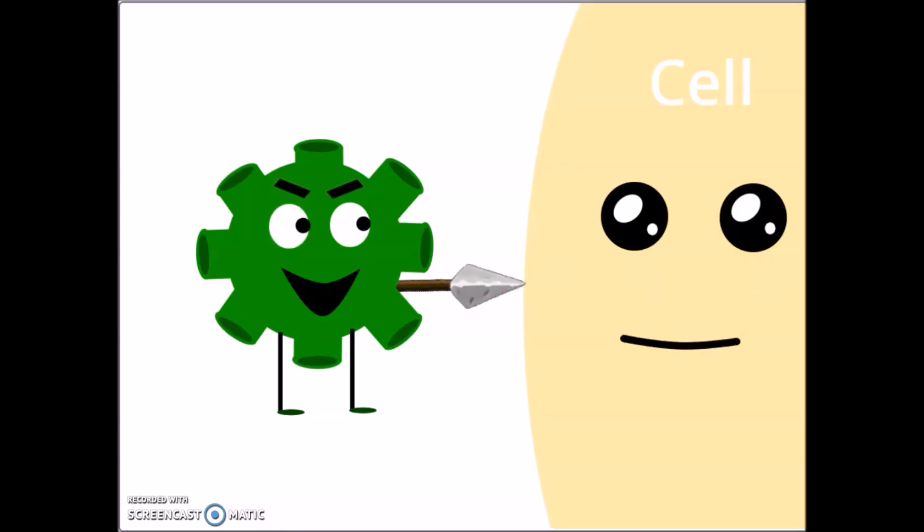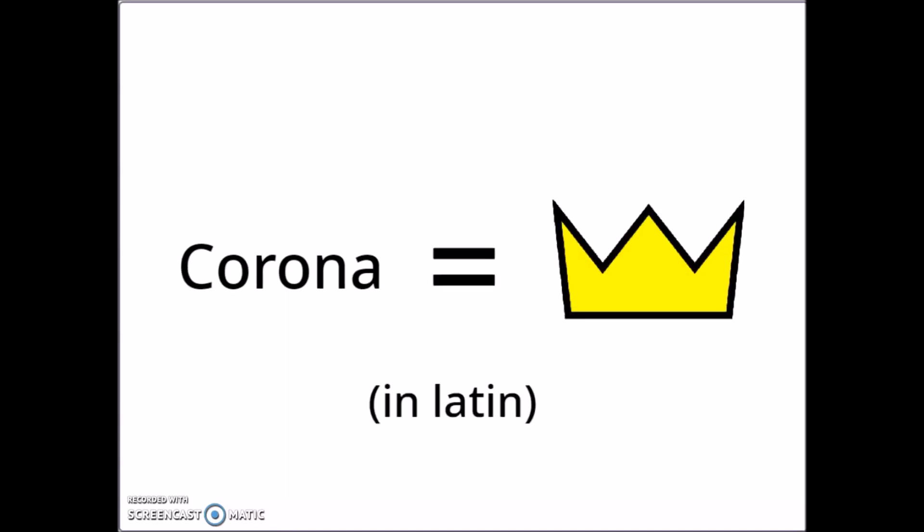The coronavirus is a new virus spreading around the world. It's called coronavirus because corona means crown in Latin. When looked under a microscope, the virus looks like it's wearing a spiky crown.